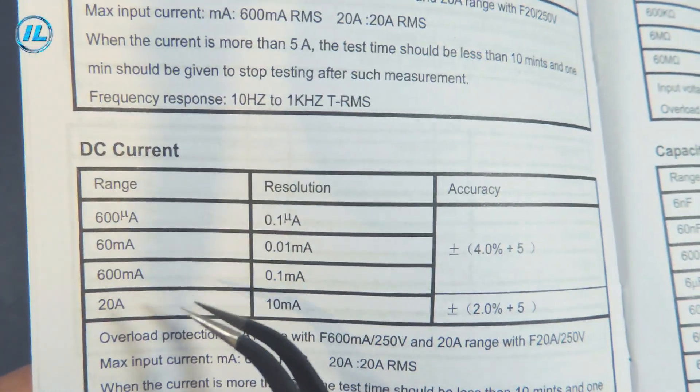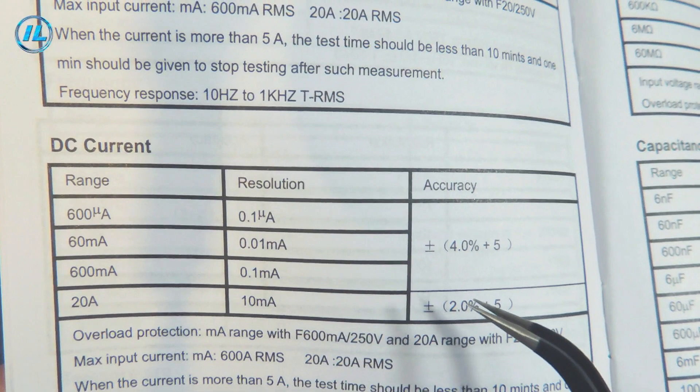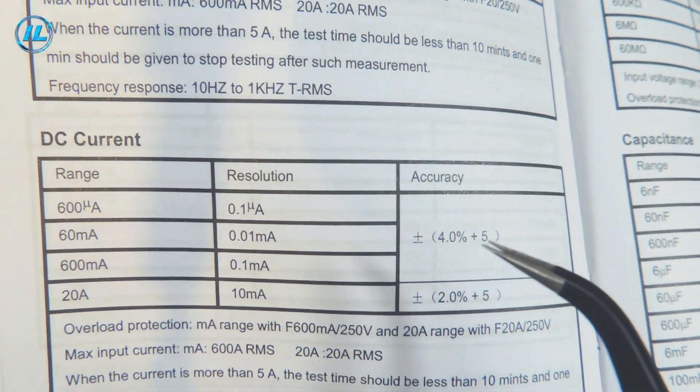DC current measurement is also up to 20 amps. The error is 2 percent. In the main range the error is 4 percent.